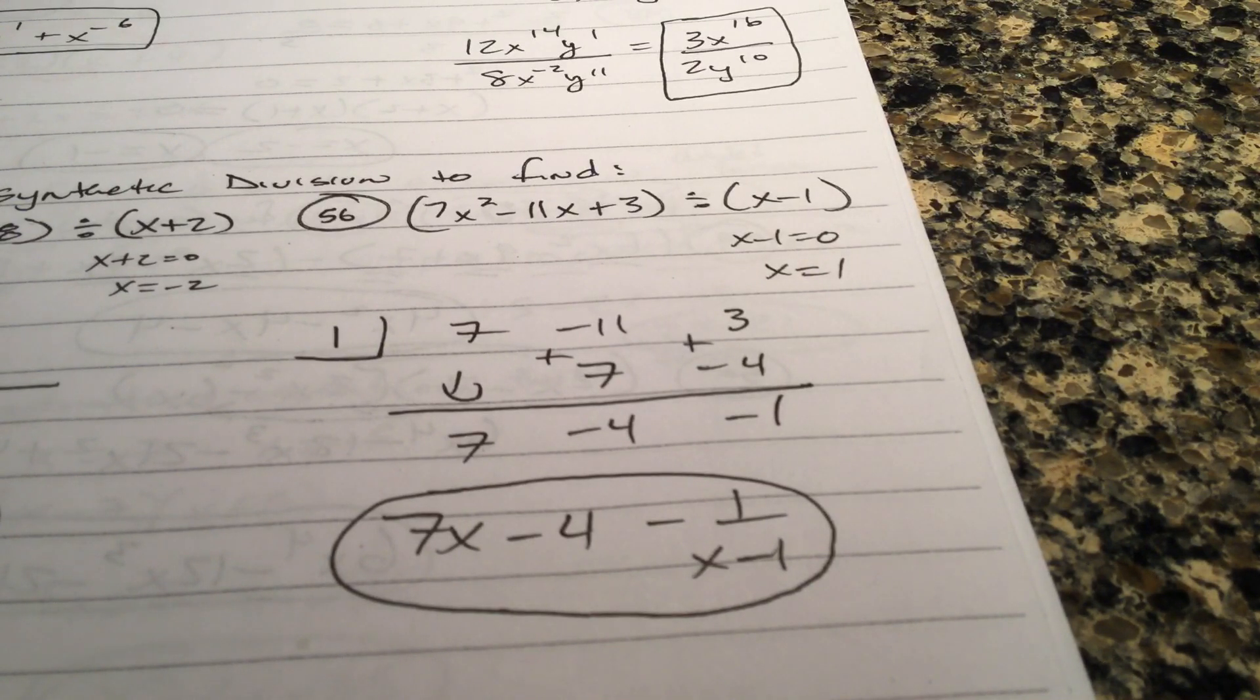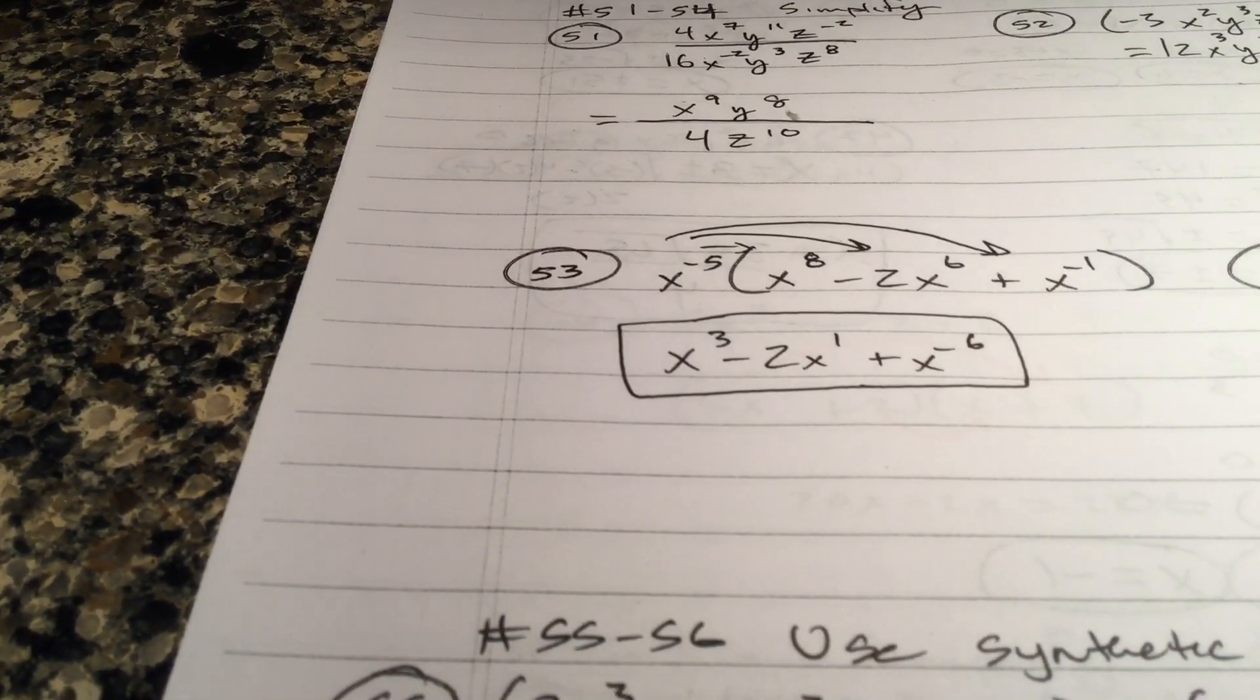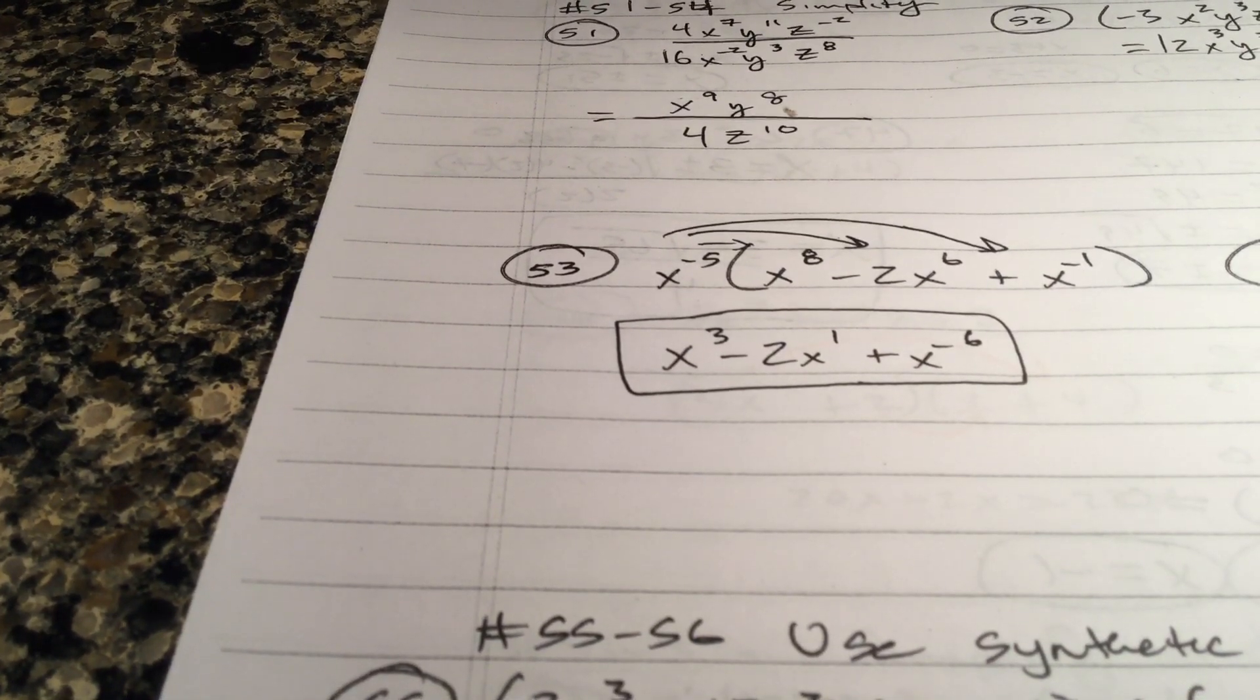And then 56. Put 1 in the cubby. 7, negative 11 and 3. Bring down the 7. Negative 1 is your remainder. You're right. Like that. 1 power less. If you started with 7x squared, you're left with 7x. Guys. Folks, this is looking like your final video for 2018. This is Yak Math Video. Signing out.